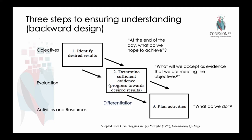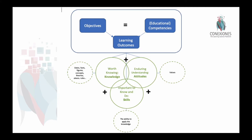Within these three steps, we also have to disaggregate objectives into knowledge, skills, and attitudes. There is nothing that you teach or anybody learns that is not a piece of knowledge, skills, and/or an attitude. This is where the word competencies comes into play. The OECD used this in 1997 to explain that the combination of knowledge, skills, and attitudes are what makes up learning outcomes.